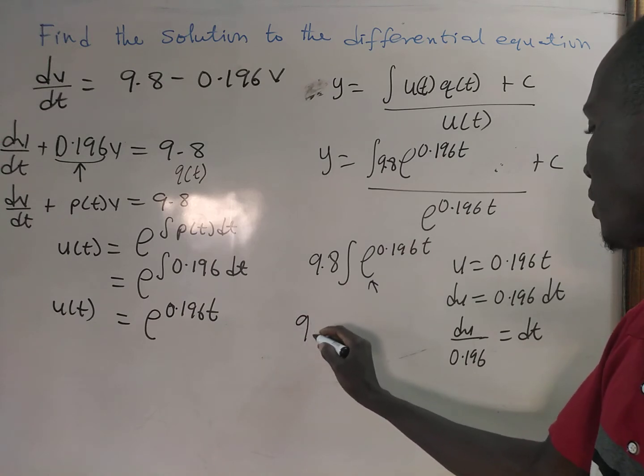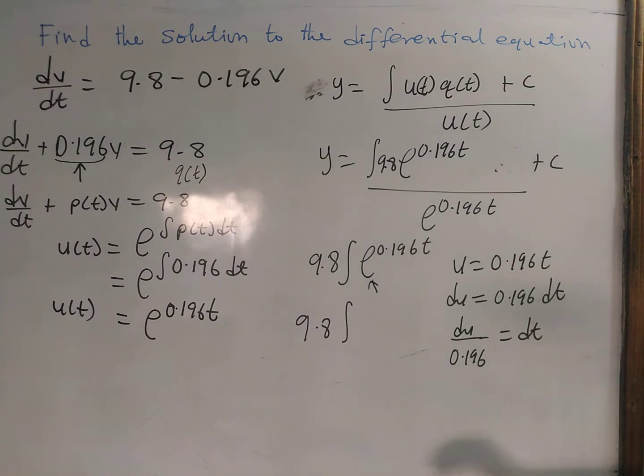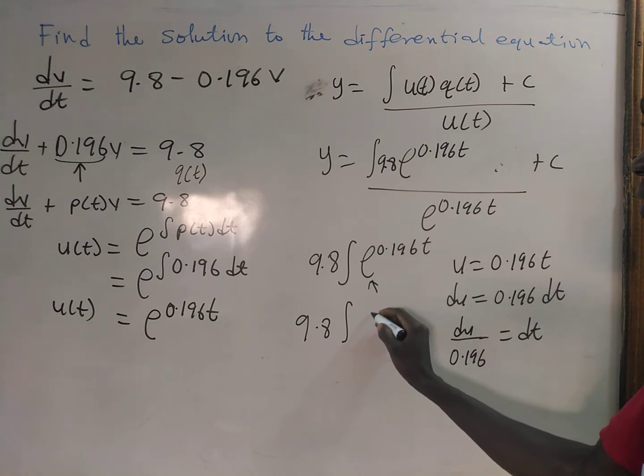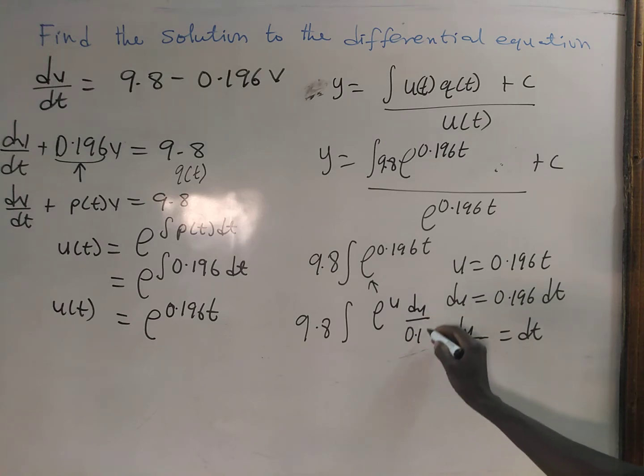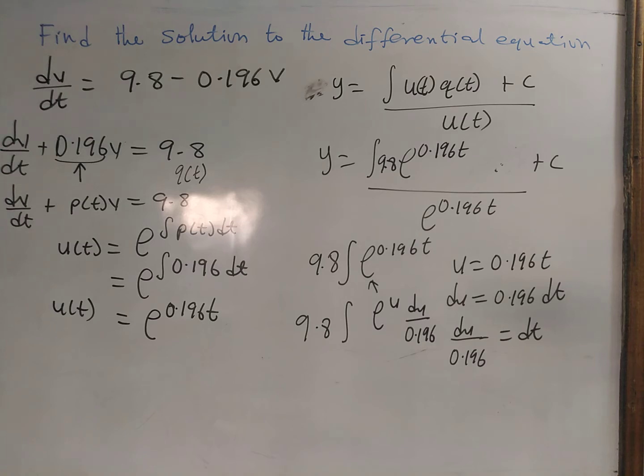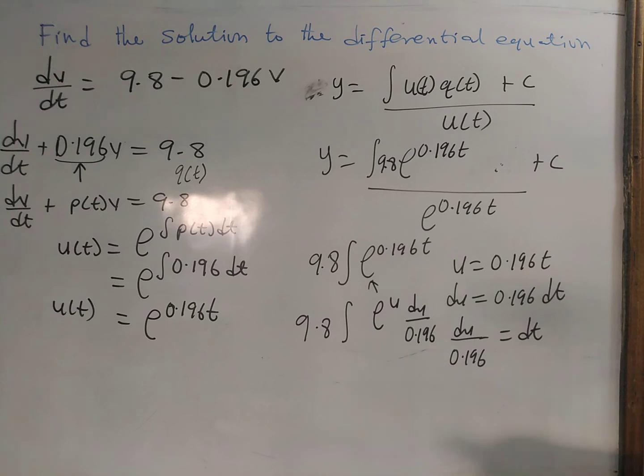So we are going to have 9.8 times the integral e to the power u times du over 0.196. That is very simple. So here we have 9.8 divided by 0.196, and that gives us 50.